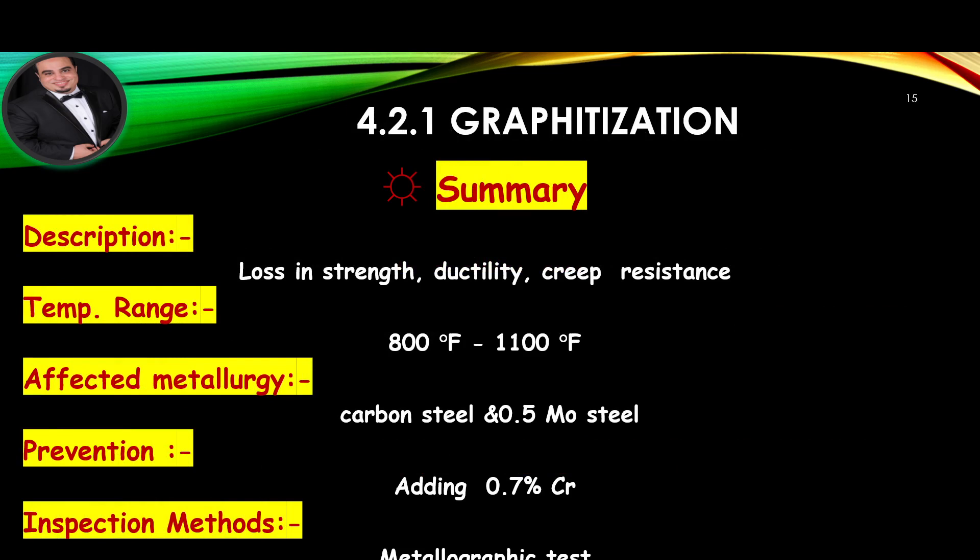Summary of Graphitization — Description: loss in strength, ductility, and creep resistance. Temperature range: 800°F to 1100°F. Affected metallurgy: carbon steel and half molybdenum steel. Prevention: adding 0.7% chromium. Inspection method: metallographic testing.